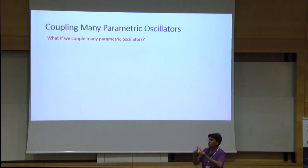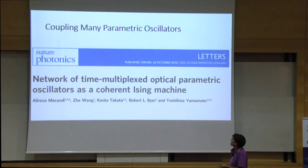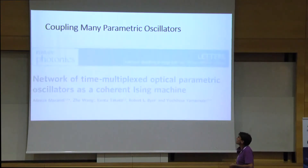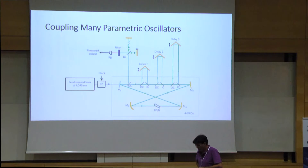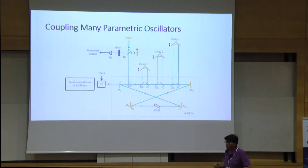We just coupled a pair of parametric oscillators, but people are very interested in networks of multiplexed parametric oscillators — this was mentioned by Yamamoto. Coupling many parametric oscillators as solvers, as a machine for solving hard problems. We want to show that this system of two coupled parametric oscillators is actually many, many, and we can make a large number of coupled parametric oscillators in a very non-trivial way.